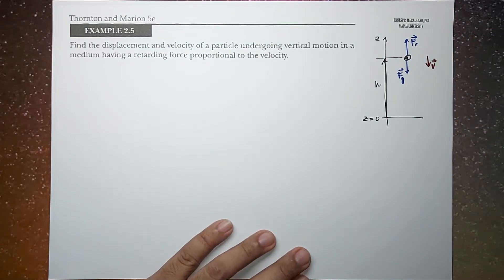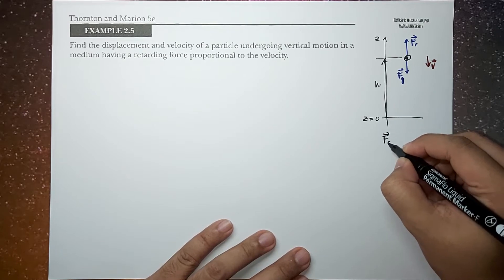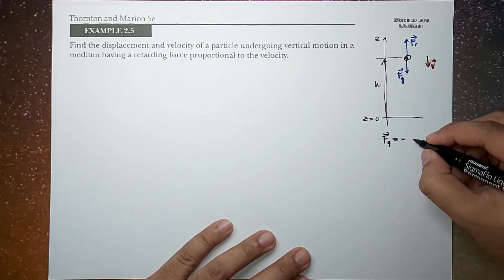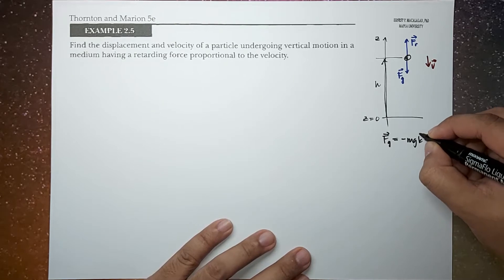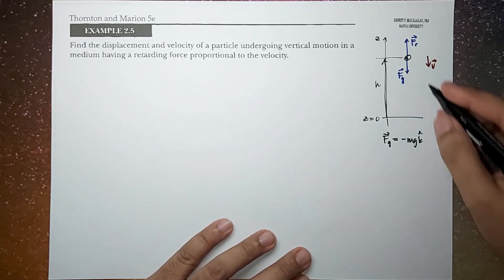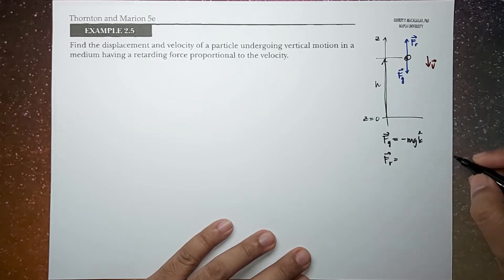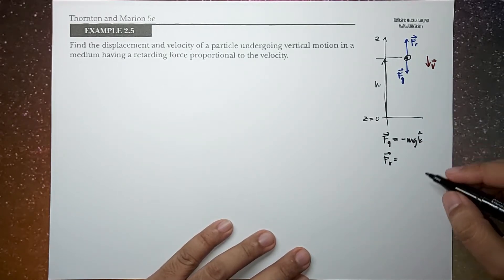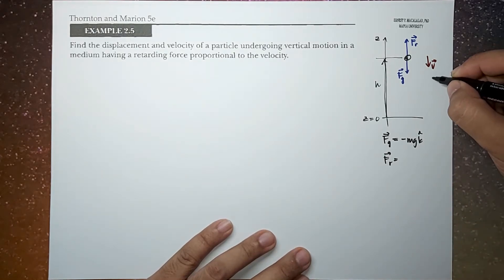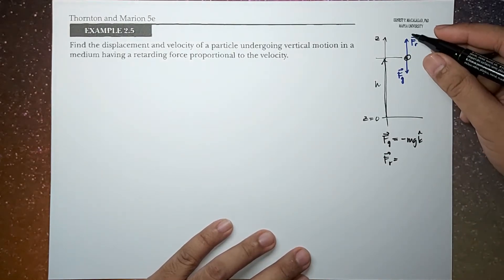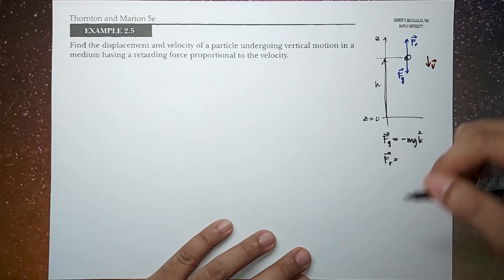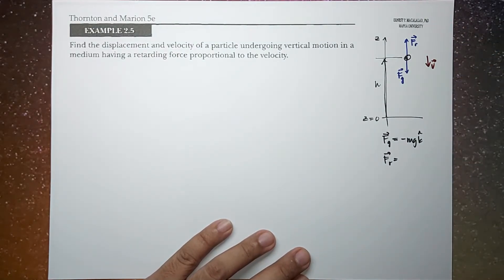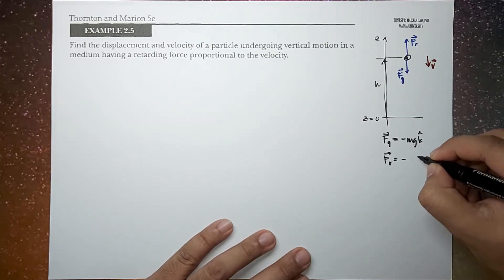Therefore we can now solve this problem by identifying these two forces. We know that the gravitational force is always downward, so this is negative mg k-hat. And your resistive force F_r will always be negative of the velocity vector. Since the velocity vector is along the negative downward direction, this becomes negative k m v k-hat.